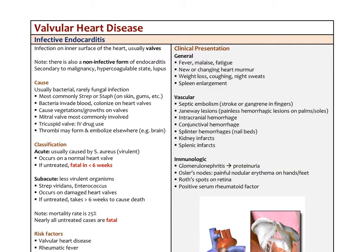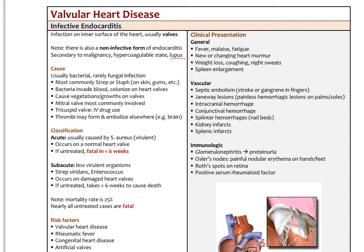One last valvular disease important to know is infective endocarditis — an infection on the inner surface of the heart, typically the valves. There's a non-infective form associated with cancer, hypercoagulable states, and autoimmune diseases like lupus, but most commonly it's bacterial, rarely fungal in immunocompromised patients. Most typically it's either staph or strep, commensal bacteria on the gums and skin.